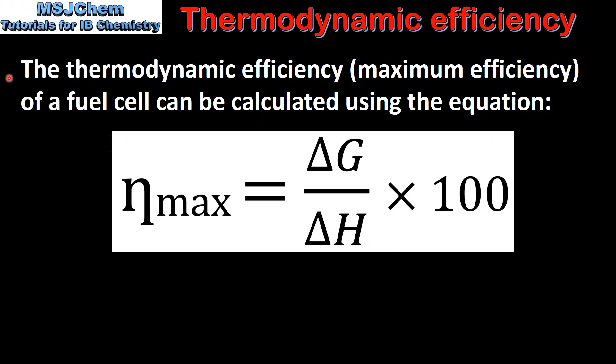The thermodynamic efficiency or the maximum efficiency of a fuel cell can be calculated using this equation. The maximum efficiency equals the change in Gibbs free energy divided by the change in enthalpy multiplied by 100.